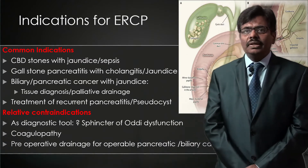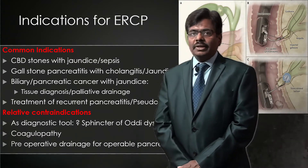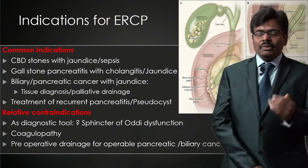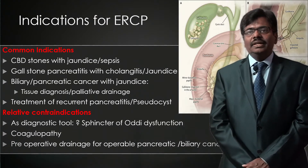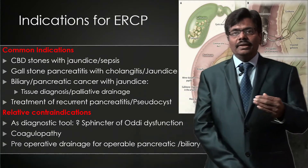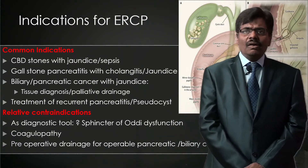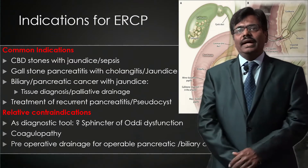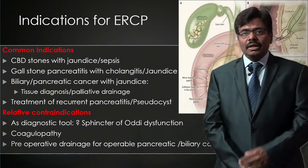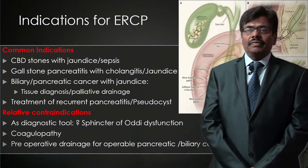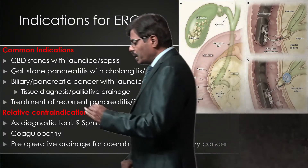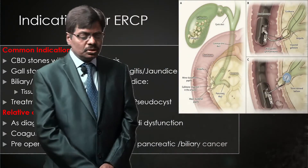Common indications include CBD stone with increasing jaundice or sepsis. Additionally, patients with biliopancreatic malignancy may need palliative drainage — either a metal stent or plastic stent. Occasionally, in a patient with operable cancer and very high bilirubin, we perform pre-operative drainage. These are the possibilities to consider, but also be aware of so-called soft indications.